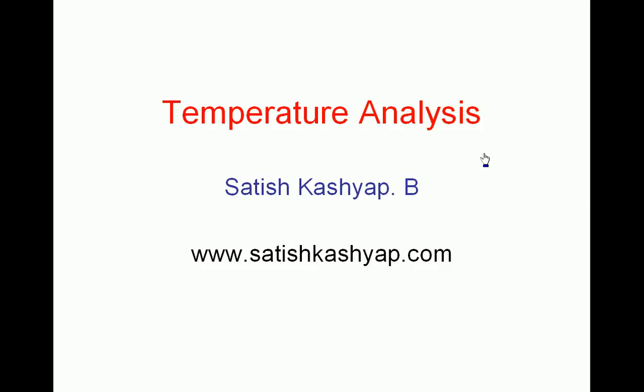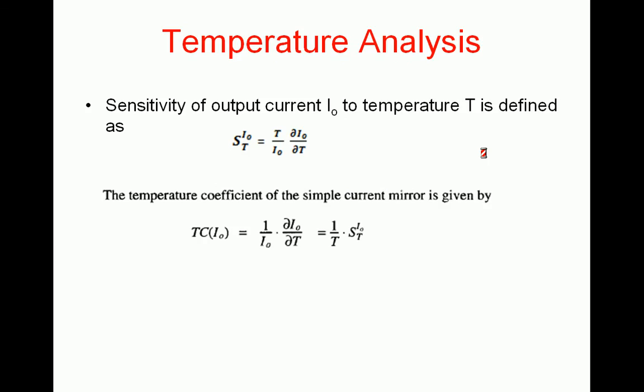Now we will discuss temperature analysis of a simple current mirror. The sensitivity of output current I0 to temperature T is defined as S_I0(T), which is equal to T divided by I0 times the partial derivative of I0 with respect to T. This is analogous to how we previously defined the sensitivity of output current to VDD, with VDD replaced by temperature.